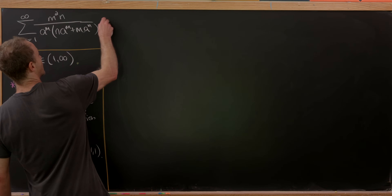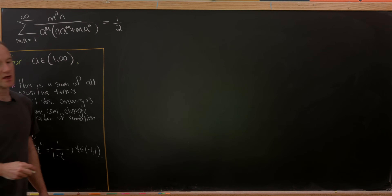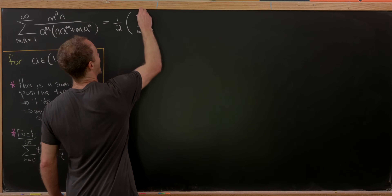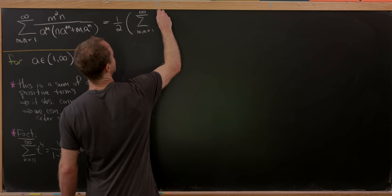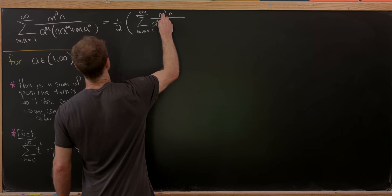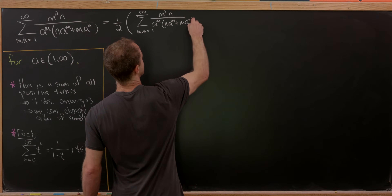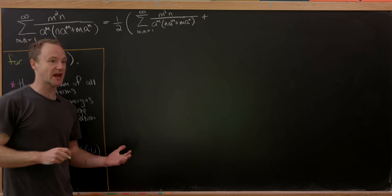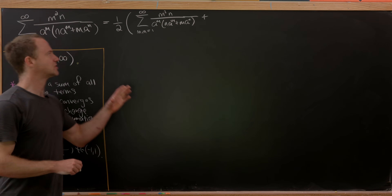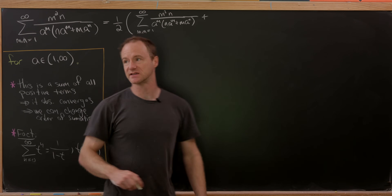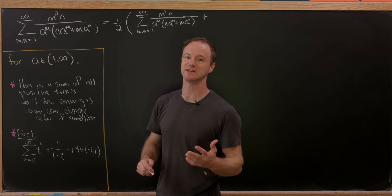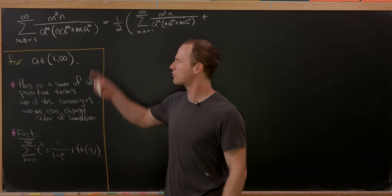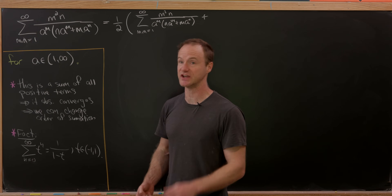The first step is to multiply by 2 over 2: take one half, then write the sum added to itself. So we have the sum as m and n go from 1 to infinity of m squared n over a to the m times n a to the m plus m a to the n, and then rewrite the same sum with m and n exchanged. The denominator expression is symmetric under that exchange.